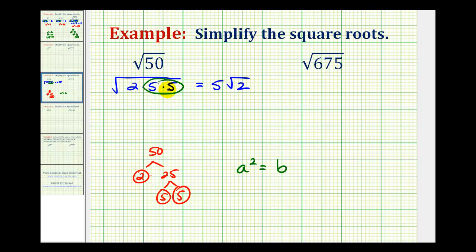So again, whenever we can identify two equal factors, that's a perfect square factor and it will simplify.